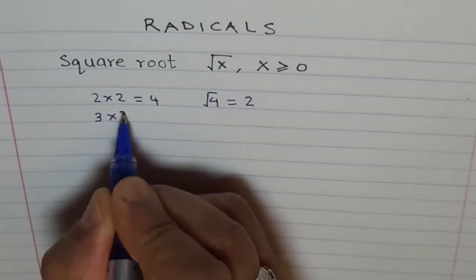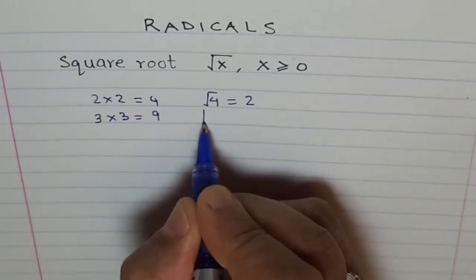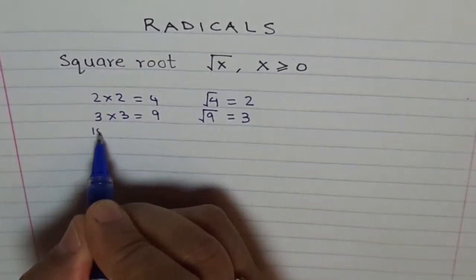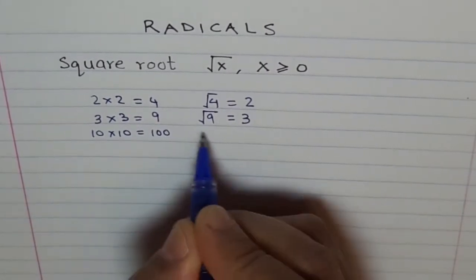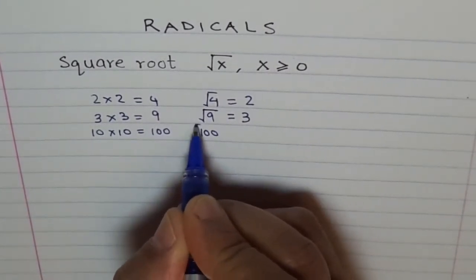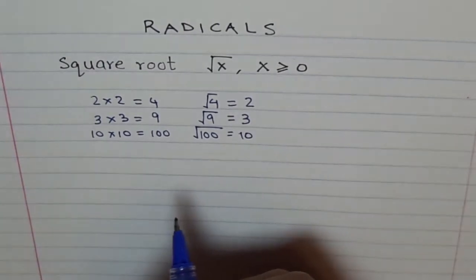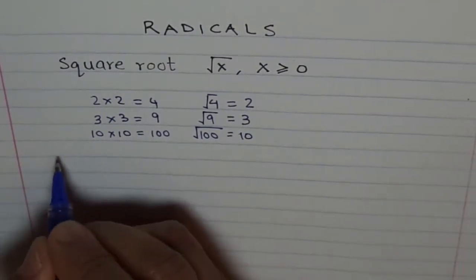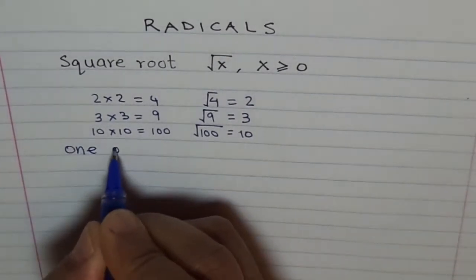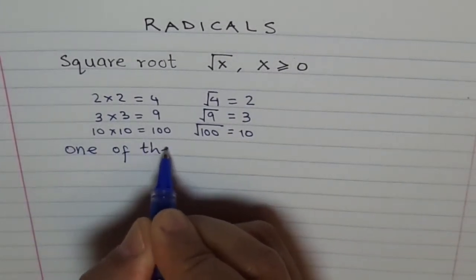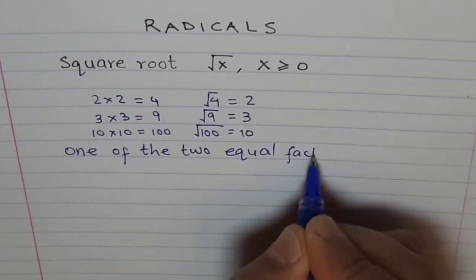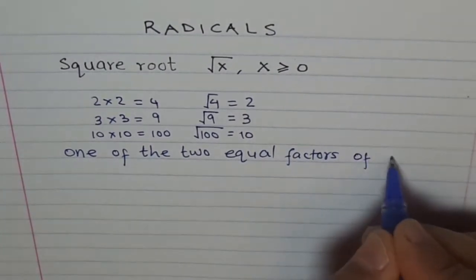So 3 times 3 equals 9, so square root of 9 is equal to 3. Similarly, 10 times 10 is equal to 100, so square root of 100 is 10. One way to define square root is: square root is one of the two equal factors of a number.